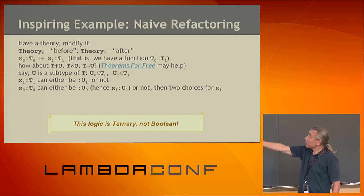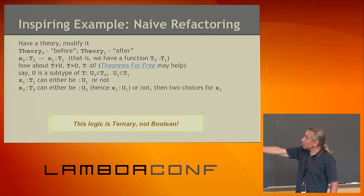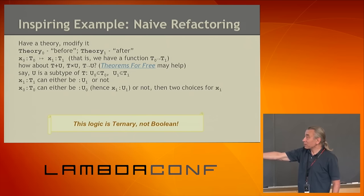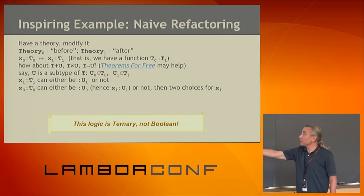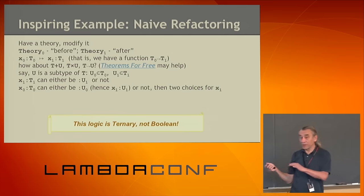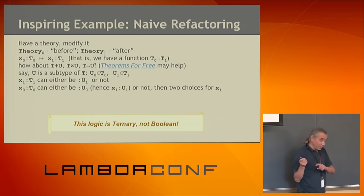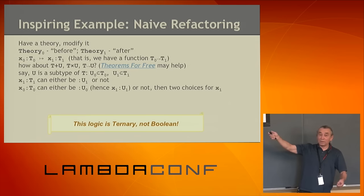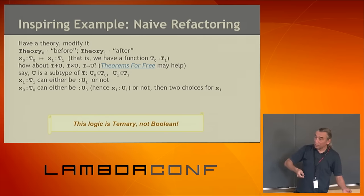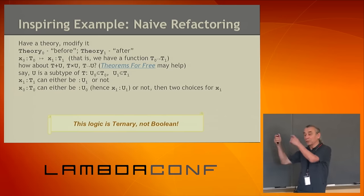If we look at what's happening today, X1 could be of type T1, and may belong to type U1 or may not. But its prototype — there may be a prototype in T0 that becomes X1 today, and that prototype could have been in U0, but maybe not. So we have two choices for X1 and actually three choices for X0. The logic is ternary yesterday, but binary — regular boolean — today.